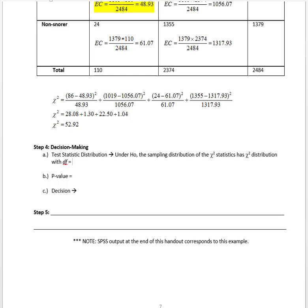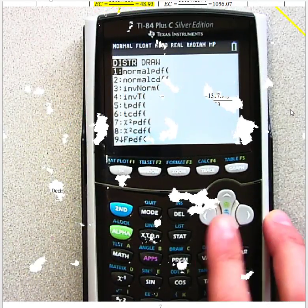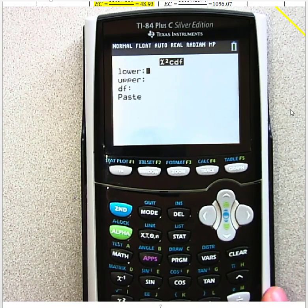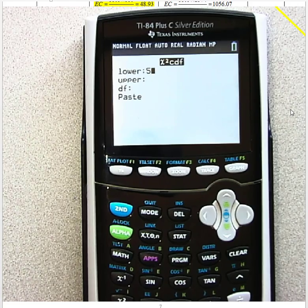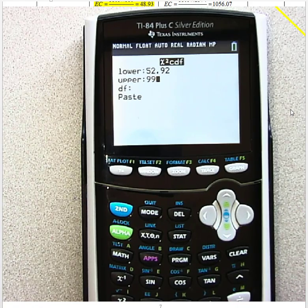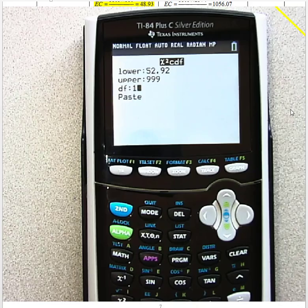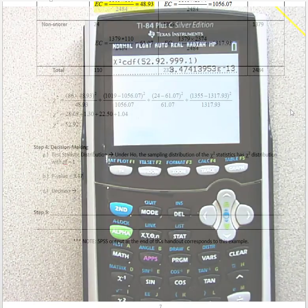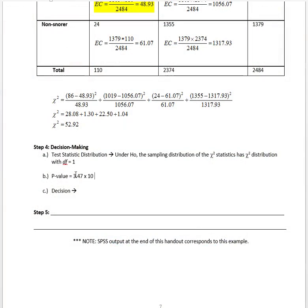In Step 4, under the null, the sampling distribution of the chi-square statistic has a chi-square distribution with one degree of freedom. We're going to calculate our p-value using that chi-square CDF. We have our lower bound as the test statistic and our upper bound is positive infinity with one degree of freedom. This is a very, very small p-value. The calculator gives it to you in scientific notation: 3.47 × 10⁻¹³.